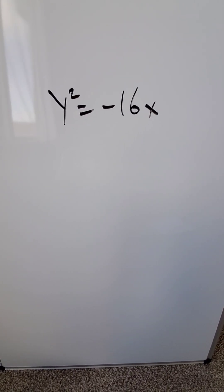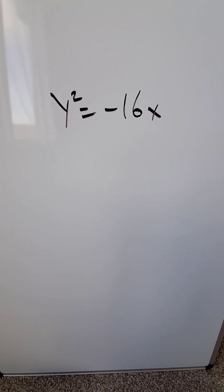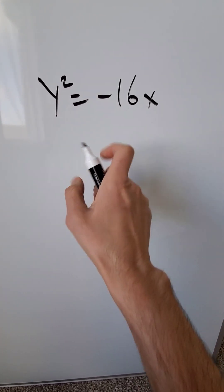Look at this equation y squared equals minus 16x and you know you're thinking about a leftward facing parabola because of the minus, it's pointing left.